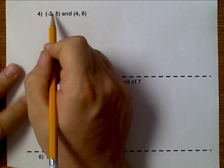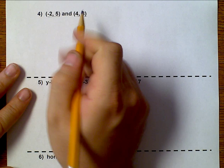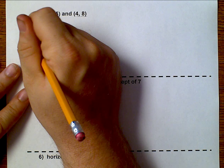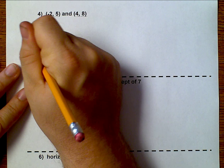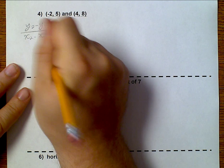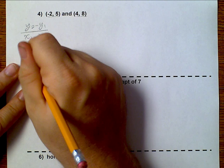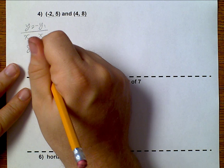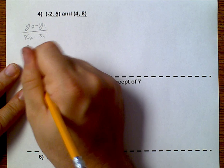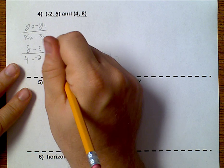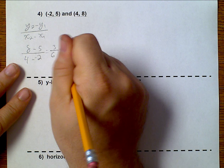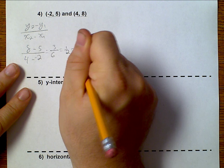Again, we're given two points. y2 minus y1, x2 minus x1. 8 minus 5 over 4 minus negative 2 gives me 3 over 6, which is 1 half. That's my m.